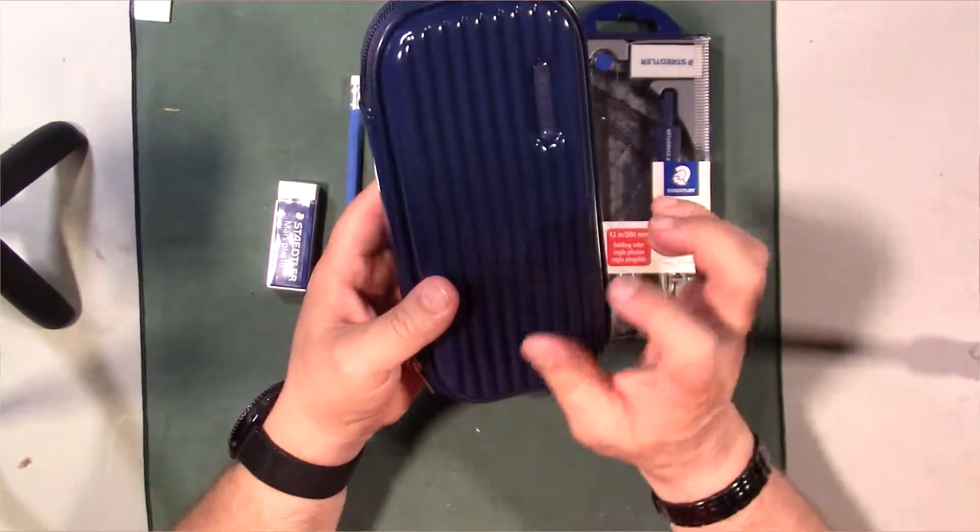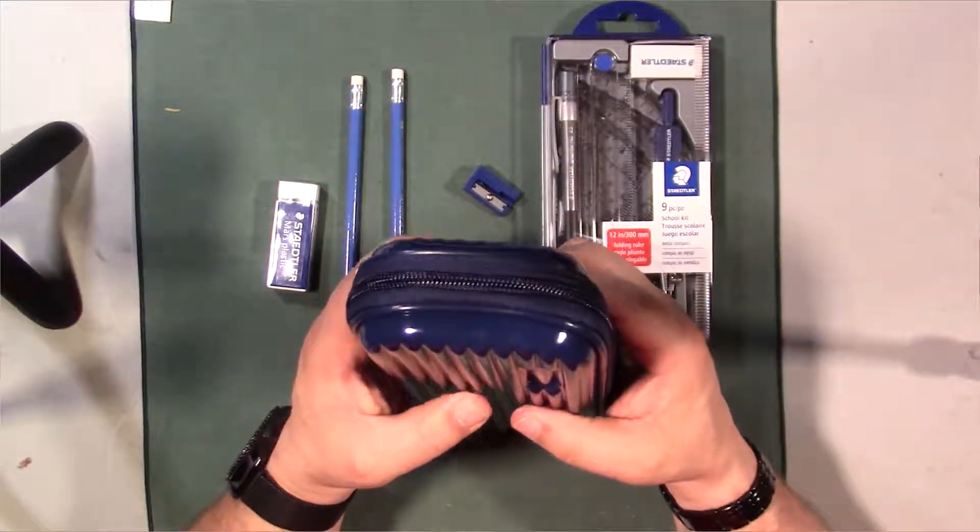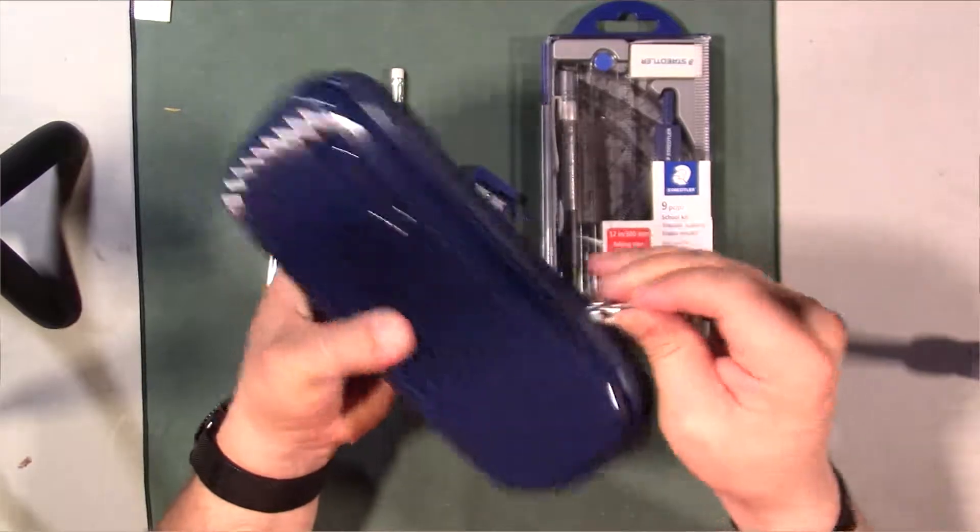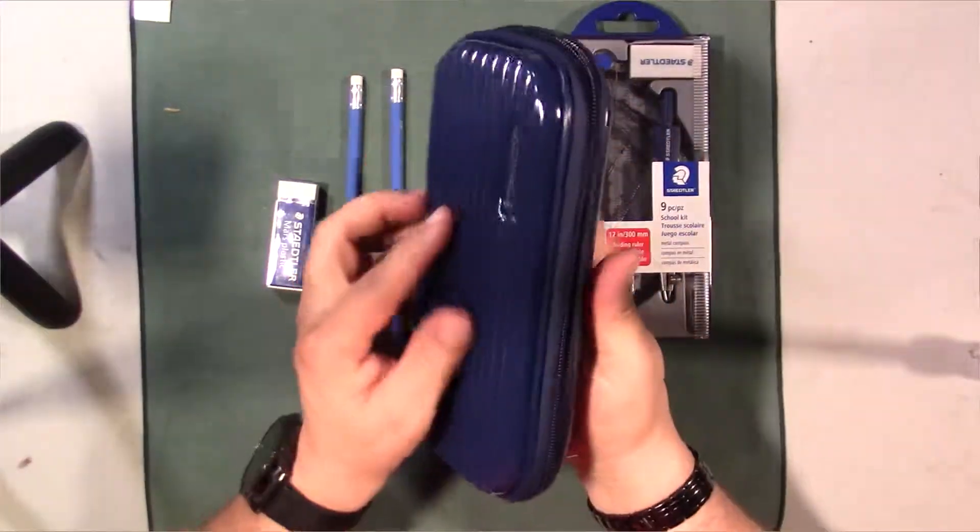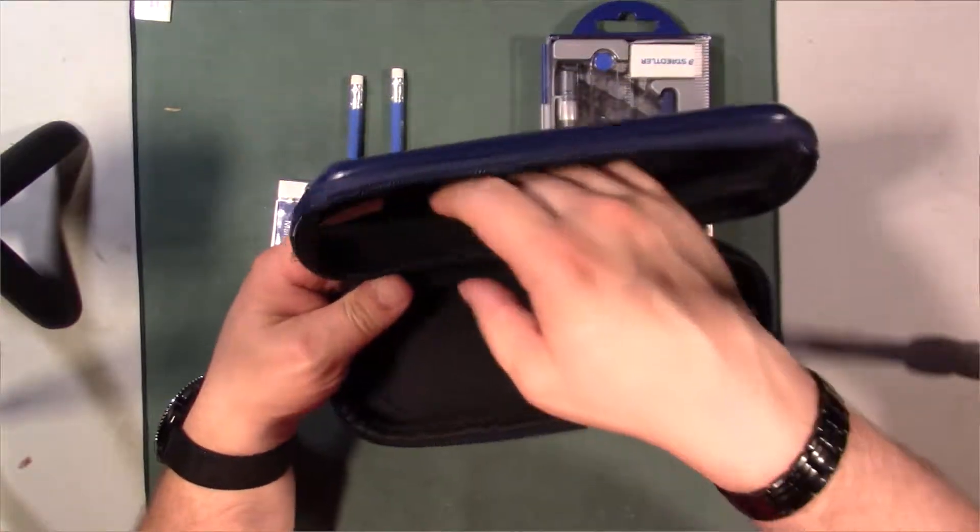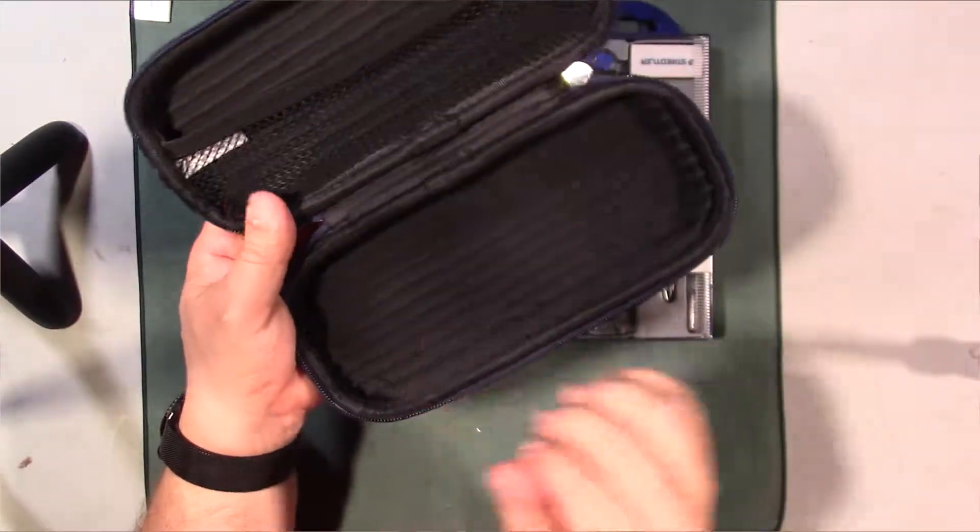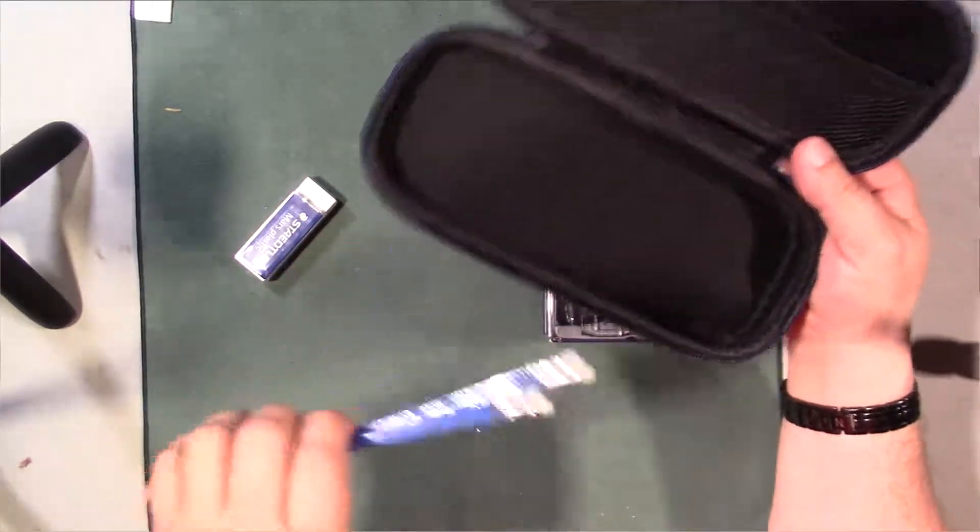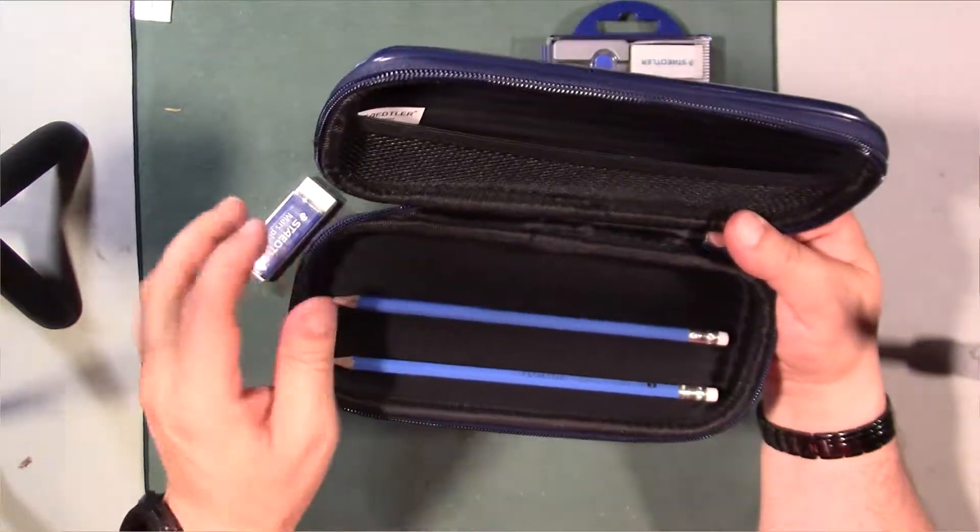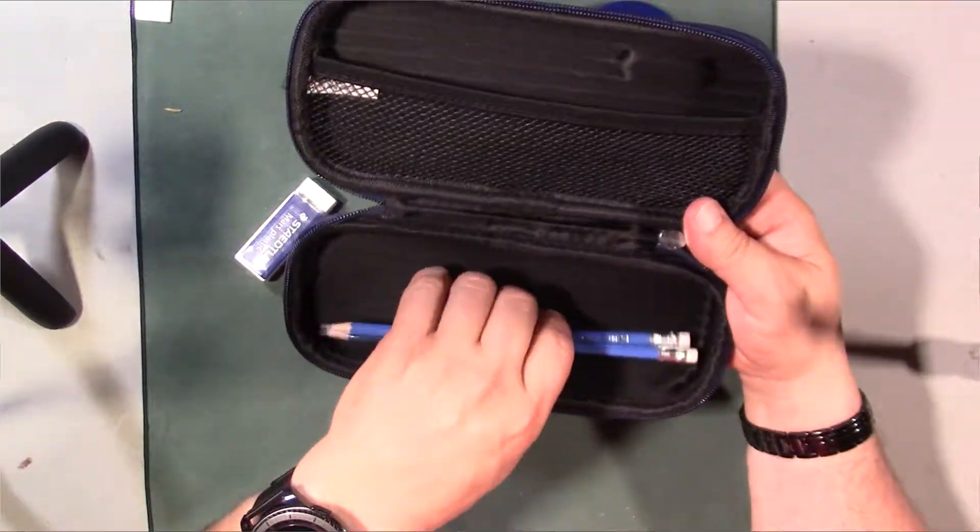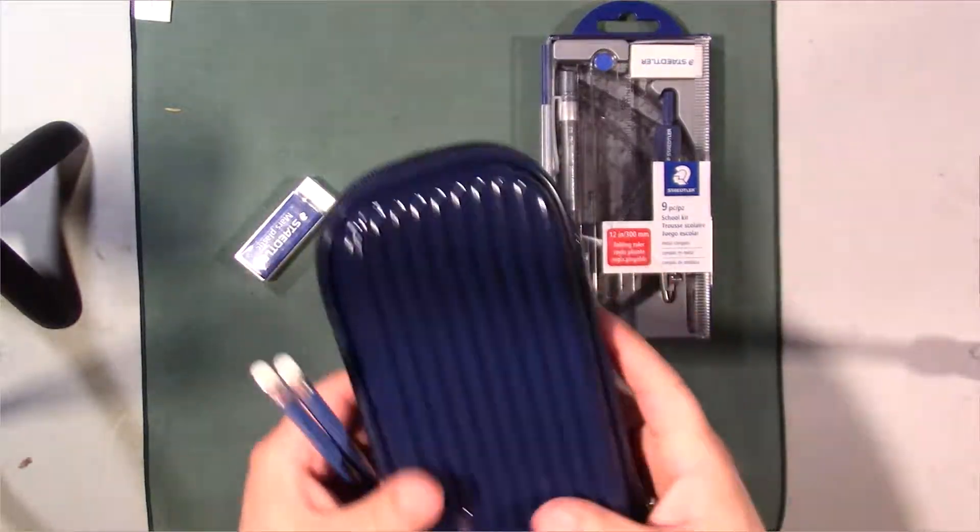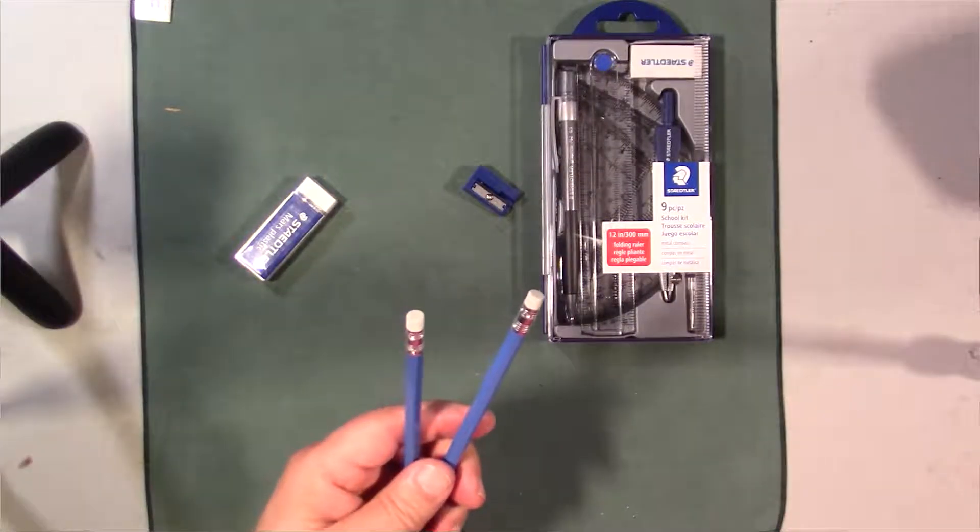The pencil case is kind of like a hard plastic, it actually feels pretty nice. The zipper feels good. So you actually get a little pouch here for all of the items and you've got a section here for your pencils. They actually got little ridges on here to kind of help hold the pencils in place. So it's a nice pencil case.